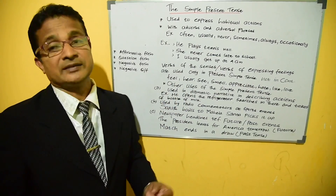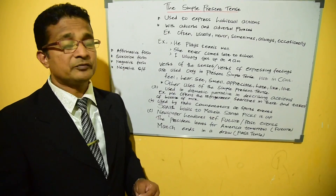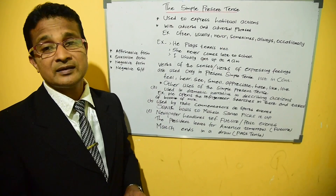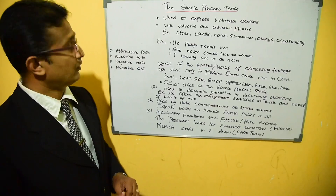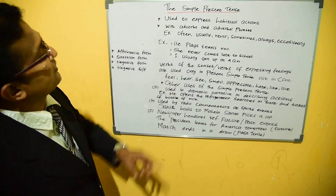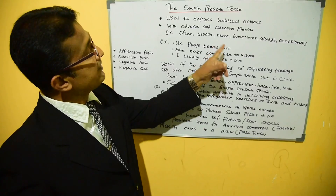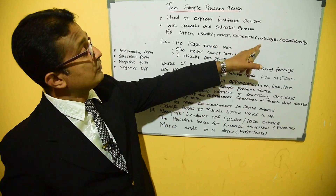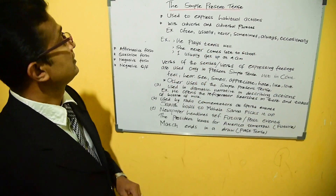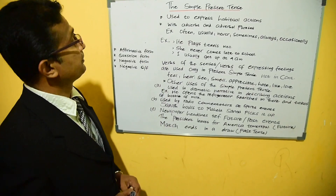What is an adverb? An adverb is a word which describes a verb. Let's see some examples for adverbs: often, usually, never, sometimes, always, and occasionally. I've written a few. Now let me go ahead with the first example.